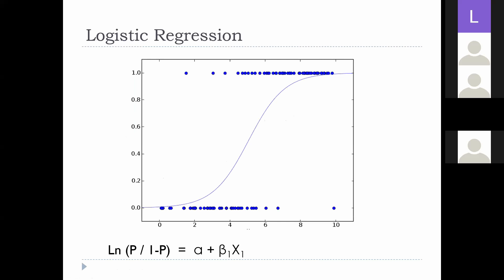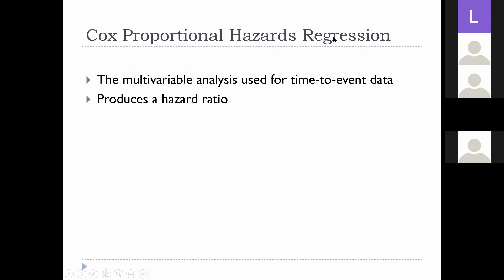Logistic regression came out of linear regression. Statisticians noticed that if you have two categorical variables, you can't create a straight line of best fit. But if you attempt to draw a logarithmic S-curve of best fit, you can fit the data and then regress on that. It's essentially a linear regression that's been logarithmized — that's the underlying mathematics of logistic regression, and logistic regression produces an odds ratio. I'm not even going to get into the underlying mathematics of Cox proportional hazards regression, but the idea is very similar; Cox regression produces a hazard ratio.